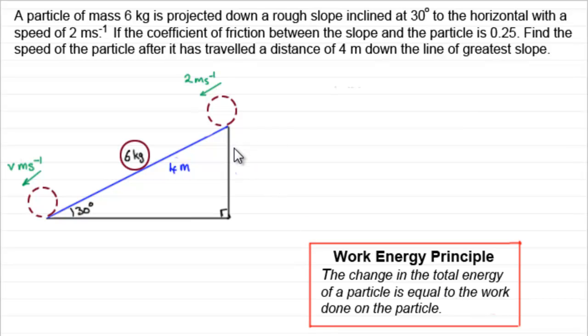What we've got here is a particle of mass 6 kilograms is projected down a rough slope inclined at 30 degrees to the horizontal with a speed of 2 meters per second. If the coefficient of friction between the slope and the particle is 0.25, find the speed of the particle after it's travelled a distance of 4 meters down the line of greatest slope.